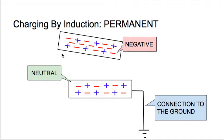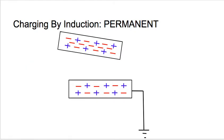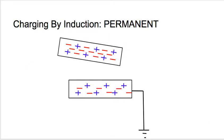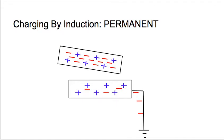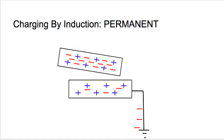If we roll this animation, you'll see how it's very similar to what we saw in charging by induction resulting in a temporary charge. As we start to move this, those negative charges start to get repelled by this negatively charged object. Because there's a connection to the ground, these negative charges now have a place to go — as that object gets close, the negative charges actually escape into the ground.